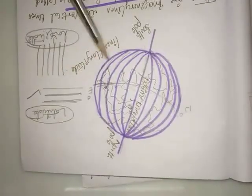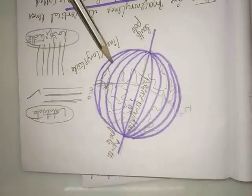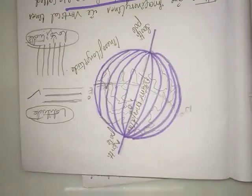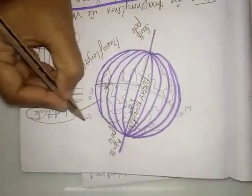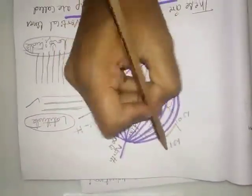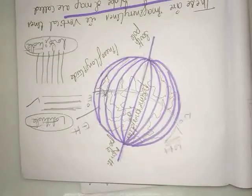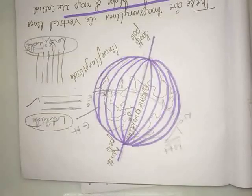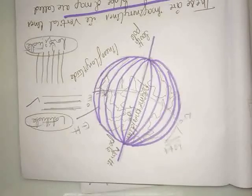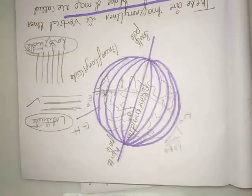These lines are also known as meridians. The prime meridian divides the earth into two equal halves — the eastern hemisphere and the western hemisphere. A hemisphere is one half of the earth divided by the equator or prime meridian. In the next class, we are going to learn how latitude and longitude together help us to locate places.